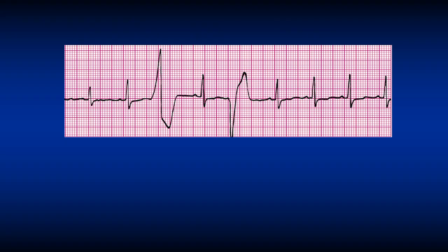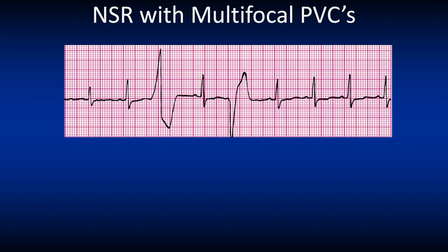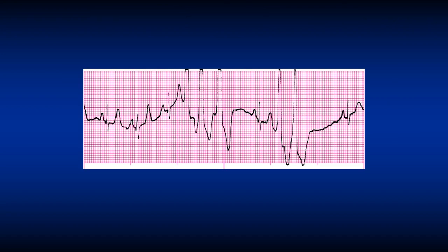Look at the PVCs — they look different, meaning they come from different areas inside the ventricle. This ECG is called a normal sinus rhythm with multifocal PVCs.